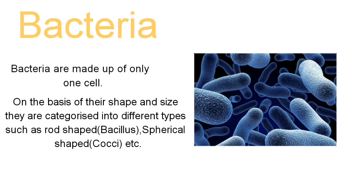Bacteria are made up of only one cell. Some bacteria need oxygen for respiration — they are called aerobic bacteria. Some other bacteria do not need oxygen — they are called anaerobic bacteria. On the basis of their shape and size, they are categorized into different types: rod-shaped known as bacillus, spherical-shaped known as cocci, spiral-shaped known as spirilla, and comma-shaped known as vibrio. Bacteria multiply rapidly by the process of fission.